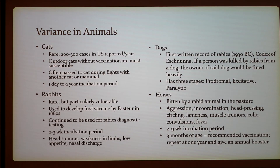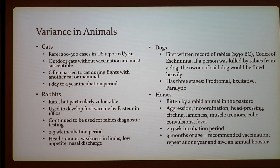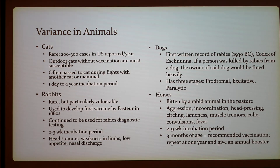For cats, rabies is rare with 200 to 300 cases reported per year in the U.S. Outdoor cats without vaccination are most susceptible. It is often passed through fighting with another cat or mammal, and the incubation period can range from one day to one year.